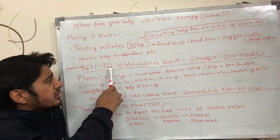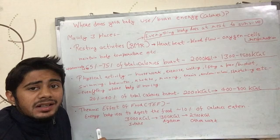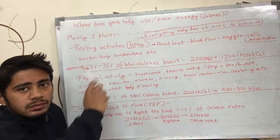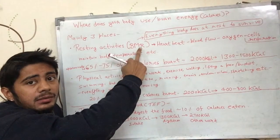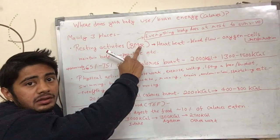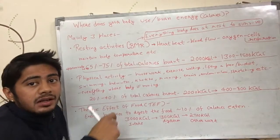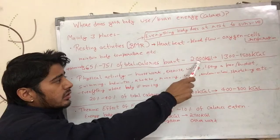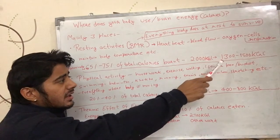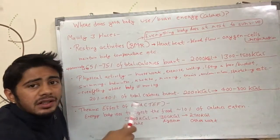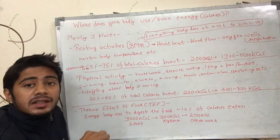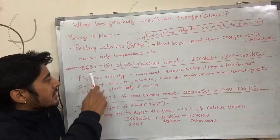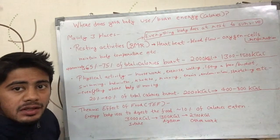Almost 65 to 75 percent of the total calories your body burns in a day are burnt through this process. This is called BMR — the energy that the body burns when you are not doing anything. So if your body burns 2000 calories, approximately 1300 to 1500 calories, which is 65 to 75 percent of 2000, come from BMR.